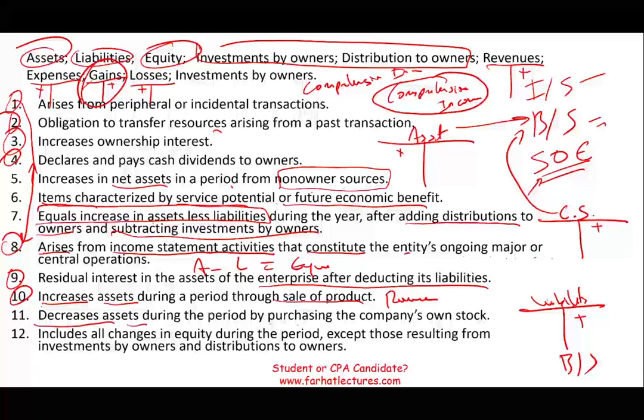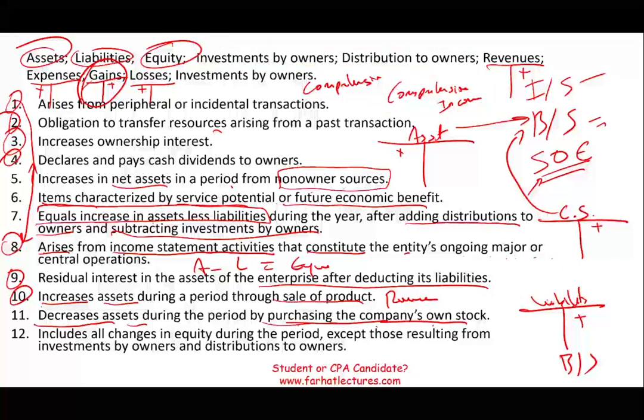Number eleven: decreases assets during the period by purchasing the company's own stock. We are decreasing assets, but by buying back our own stock. You might think that's an expense, but no — when you buy back your own stock, you're giving money to the owners. That's distribution to owners.